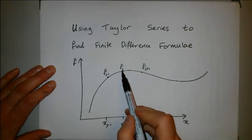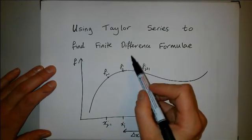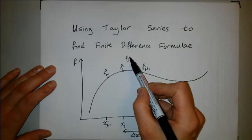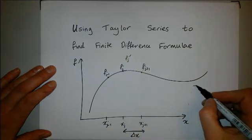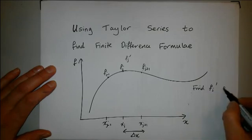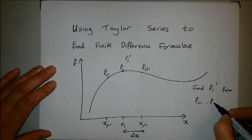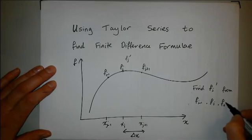Now I want to find the gradient at this point given these three points, so I'm going to call that f'_j. So what I want to do is find f'_j from f_{j-1}, f_j, and f_{j+1}.